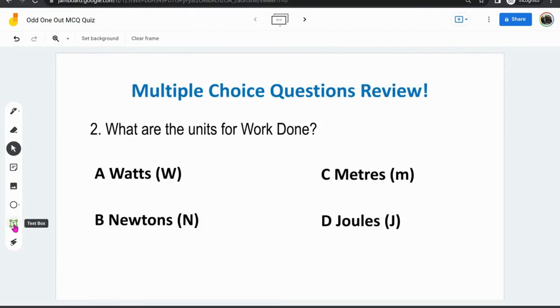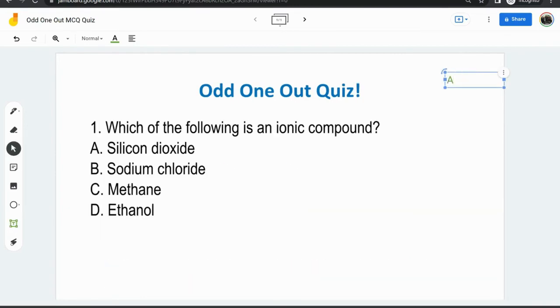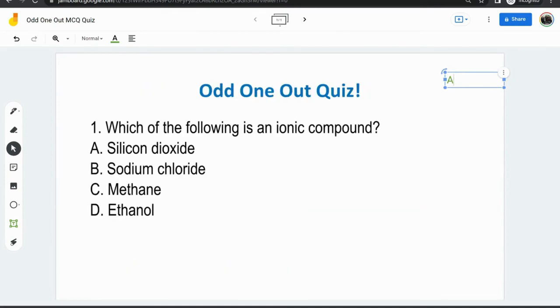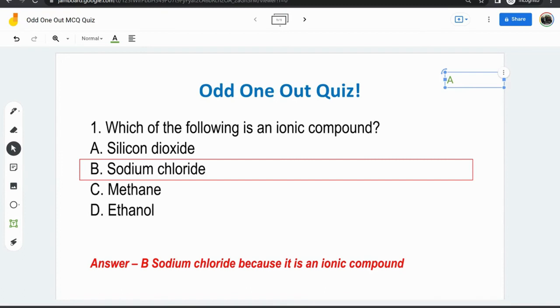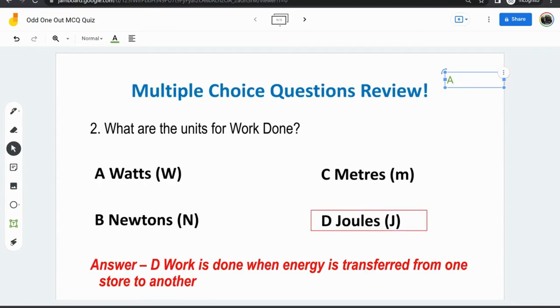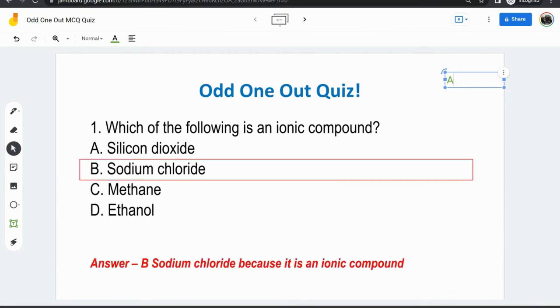Now the students can use the text box option to write down what they think the answer is. They can even write their reasons as well. Because the maximum amount of time between each slide transition in the GIF is 20 seconds, this activity and approach will ideally suit students that like quick reviews.